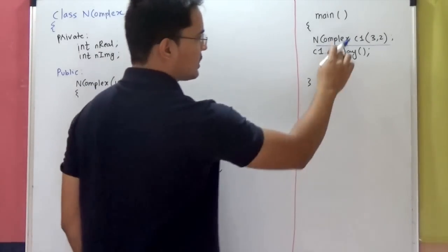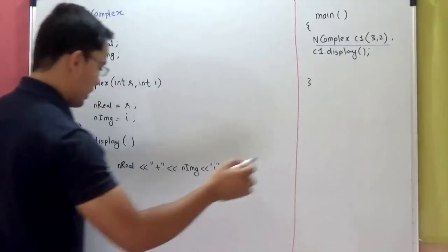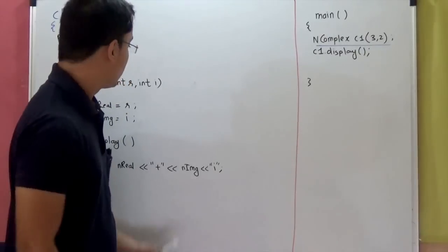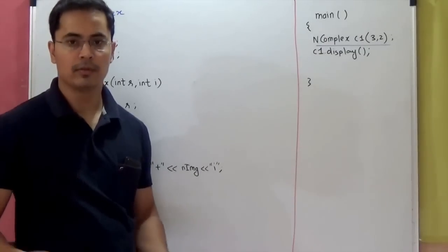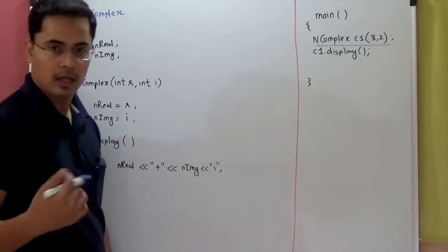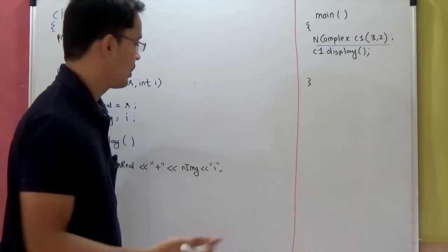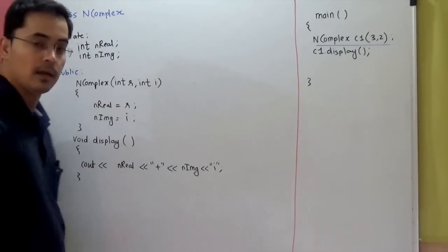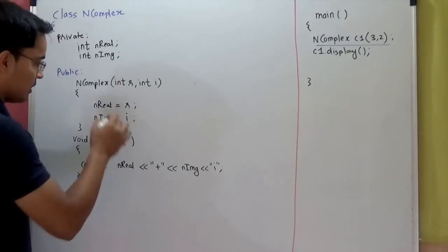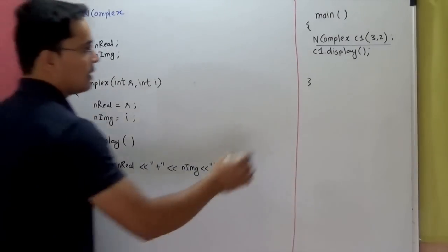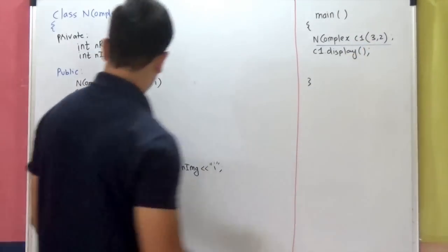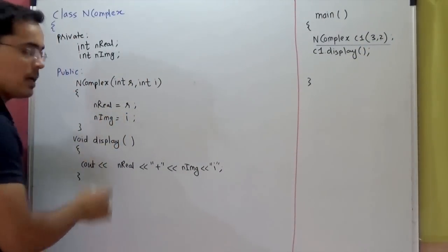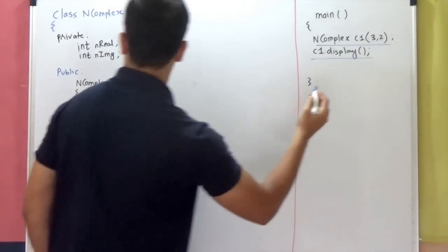So when you create an object of the class NComplex C1, we are invoking the parameterized constructor. As I told you in the last video, C++ gives us one default constructor which will initialize your data members to garbage. In an earlier video, we had written one default constructor of our own without any parameters, which was initializing the data members to 0.